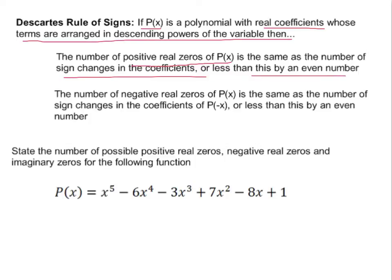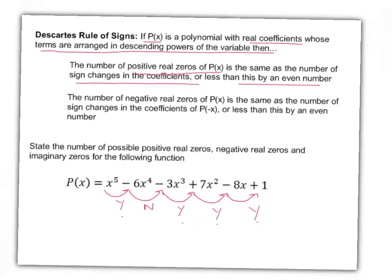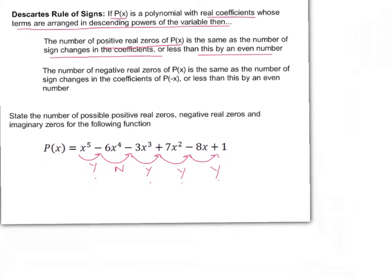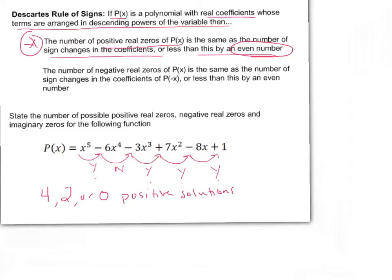For this problem, counting sign changes: positive to negative is one sign change, negative to negative is not a change, negative to positive is a sign change, positive to negative is a sign change, and negative to positive is a sign change. That gives us four sign changes total. So we could have four, two, or zero positive solutions.